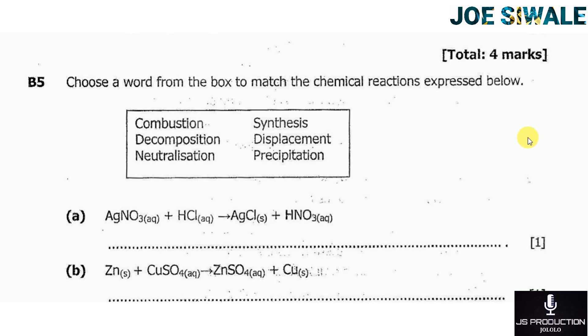Then B, zinc plus copper sulfate produces zinc sulfate plus copper. This type of reaction is a displacement reaction. As you can see, zinc displaces copper from copper sulfate to produce zinc sulfate plus copper.